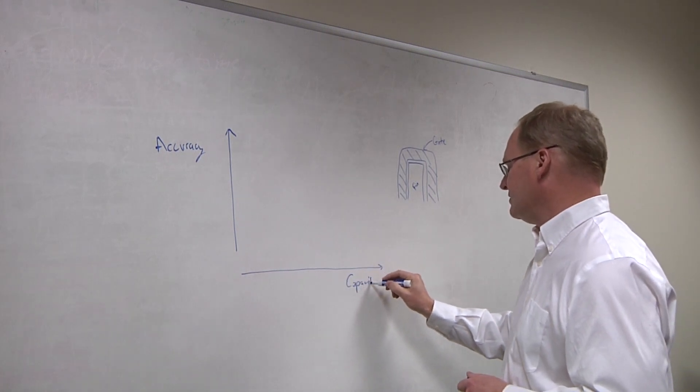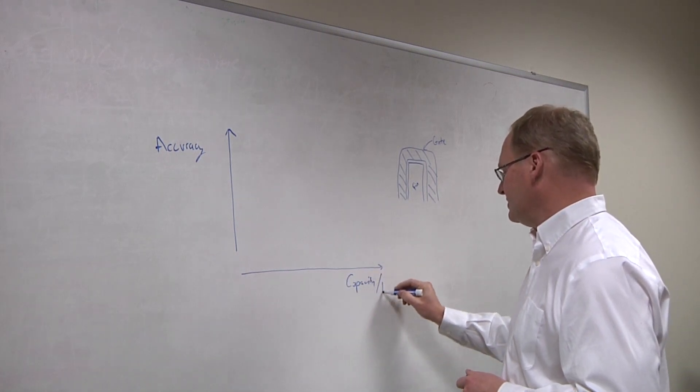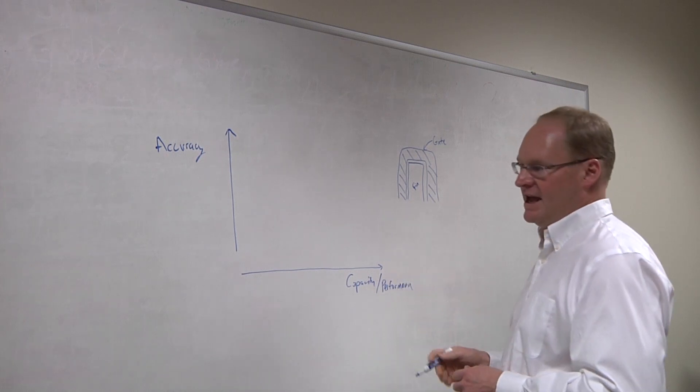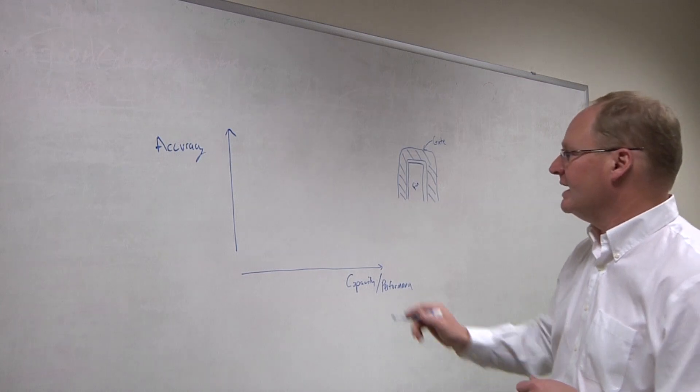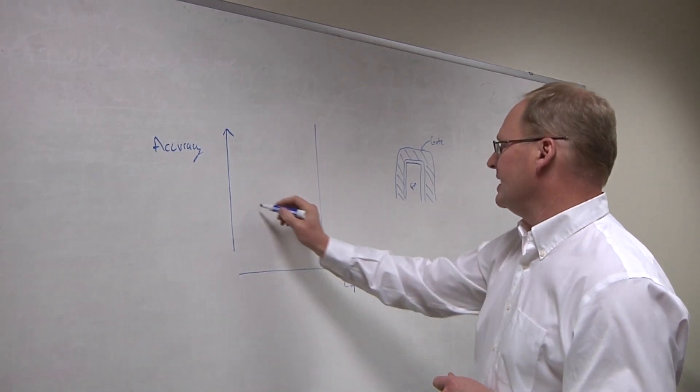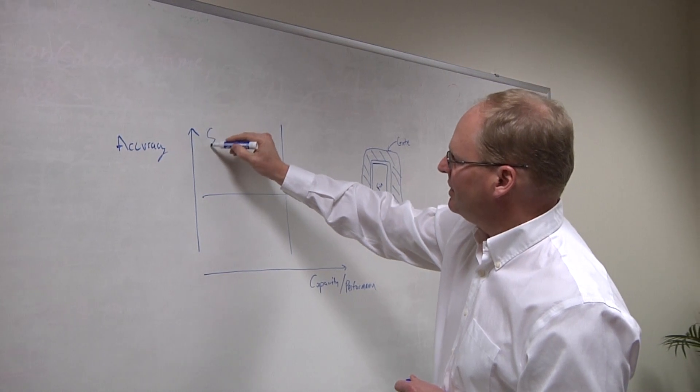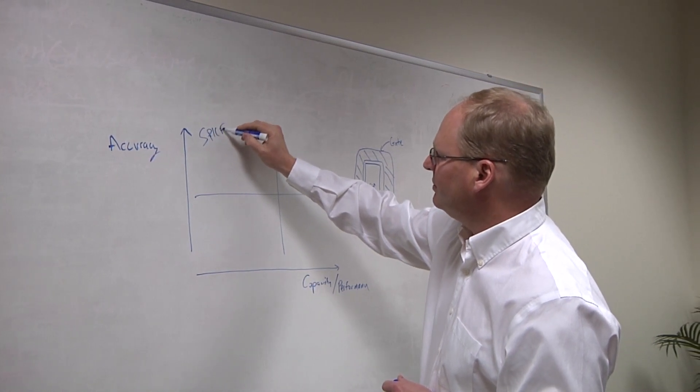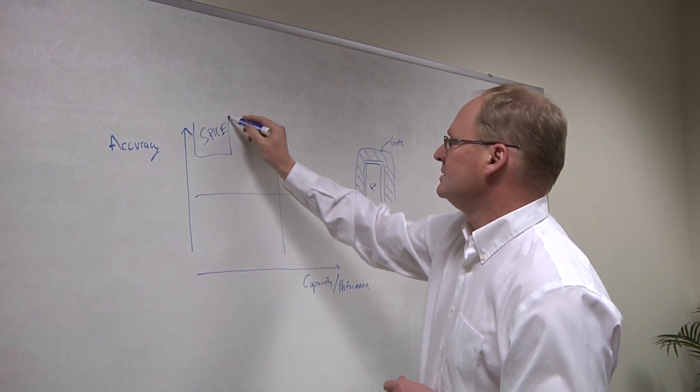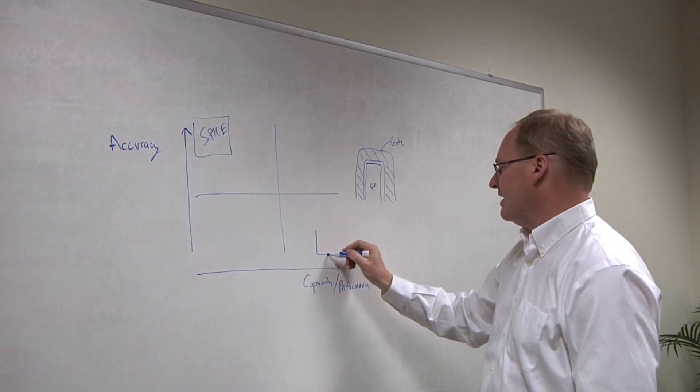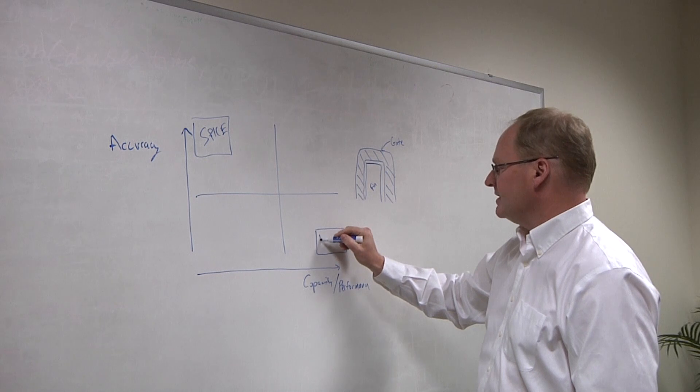And on this axis, we'll take a look at capacity. And really, capacity and performance kind of go hand in hand, so we'll just plot them together. Okay. And traditionally, we can kind of break this into quadrants. If you want high accuracy, then you're up here in the traditional Spice world.